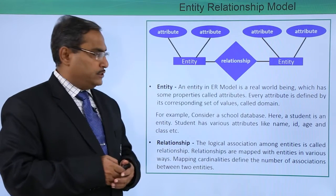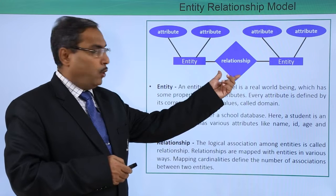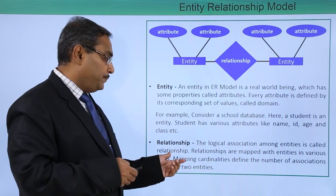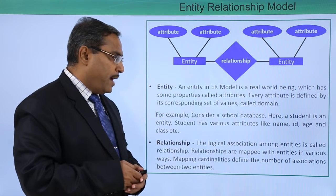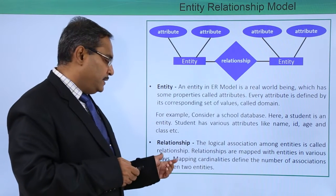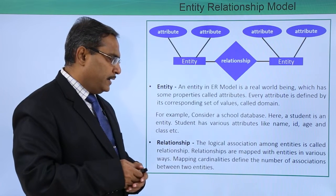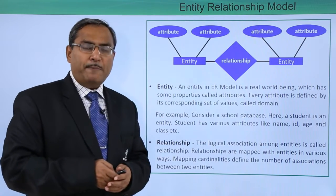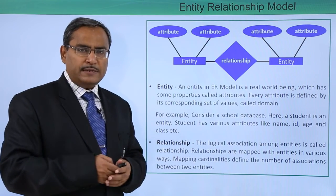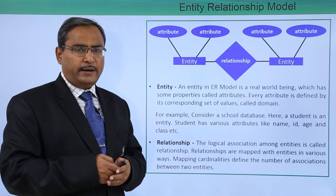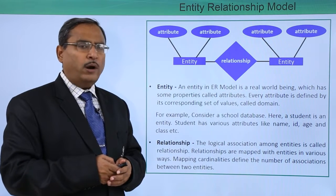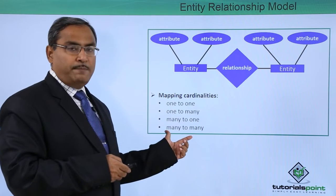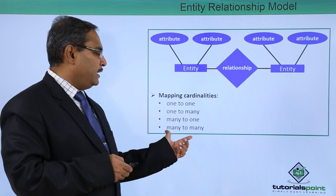Now let us go for the relationship, represented by a diamond-shaped box. The logical association among entities is called a relationship. Relationships are mapped with entities in various ways. Mapping cardinality defines the number of associations between two entities. We have basically four different mapping cardinalities: one to many, many to one, one to one, and many to many.